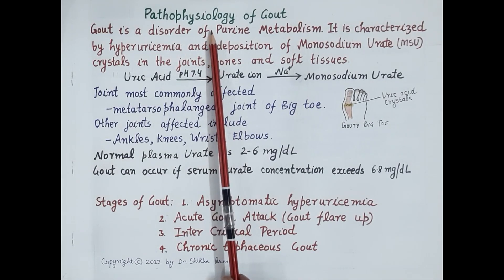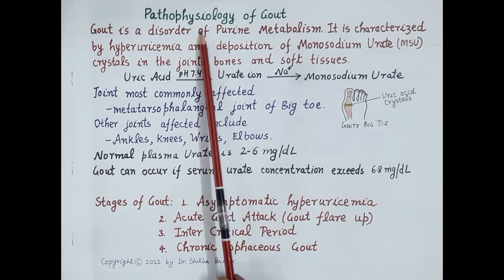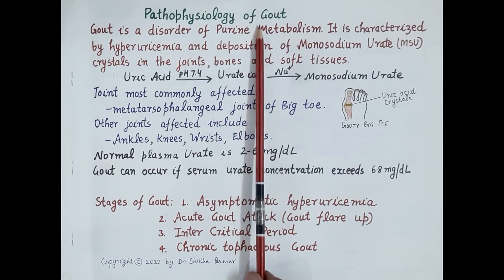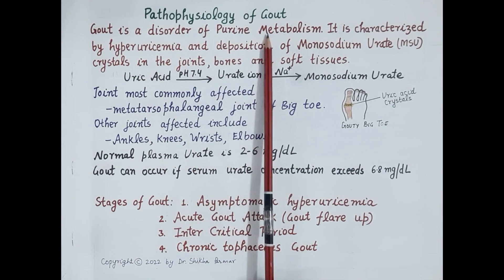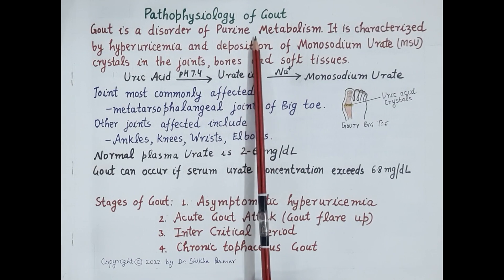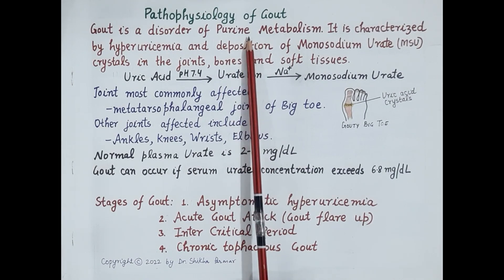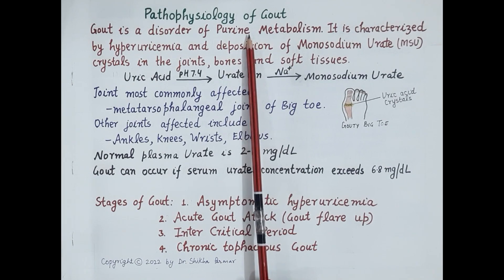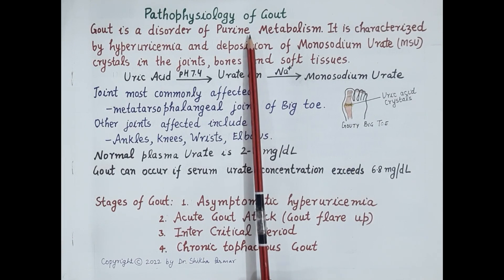Hello students. In today's video we are going to discuss pathophysiology of gout. Gout is a disorder of purine metabolism. As we all know, purines are nitrogenous bases, namely adenine and guanine. These bases are mainly required for the synthesis of nucleotides, and nucleotides are the building blocks of DNA and RNA. Now we will study about purines in detail during this video.